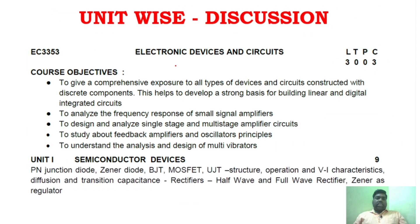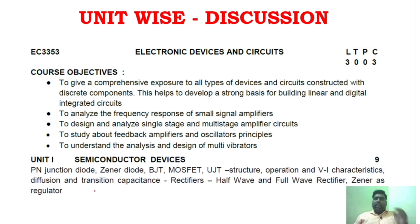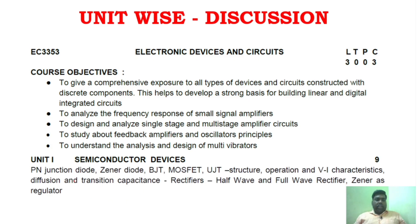Now I will start with unit-wise discussion. Unit 1 is very simple — it covers the very basics of electronics. First you need to know about P-N junction, Zener diode, UJT, and BJT. The basic content of unit 1 is very, very simple.